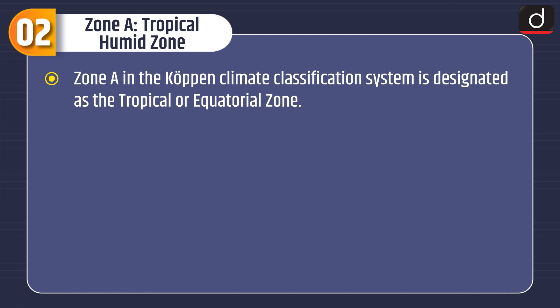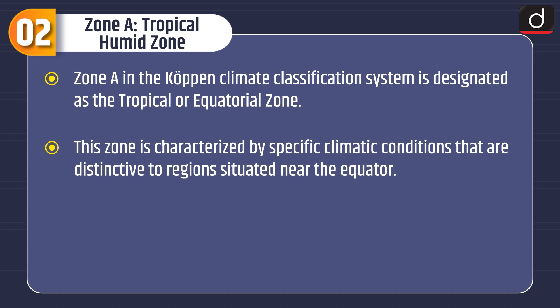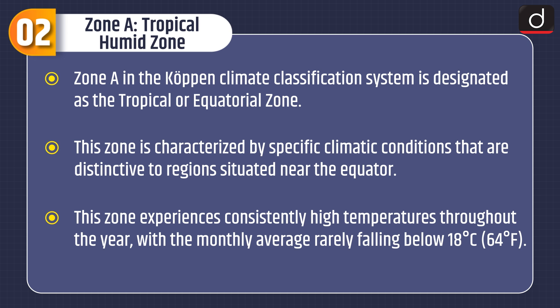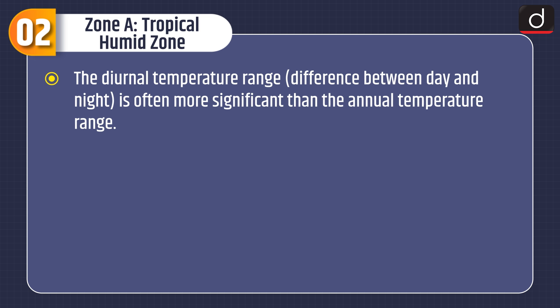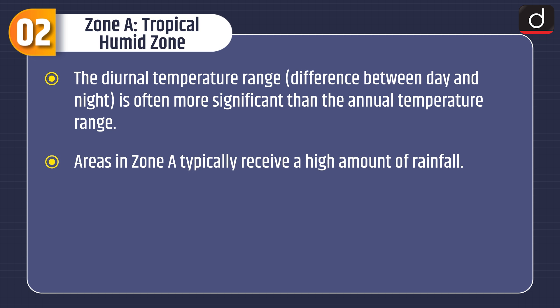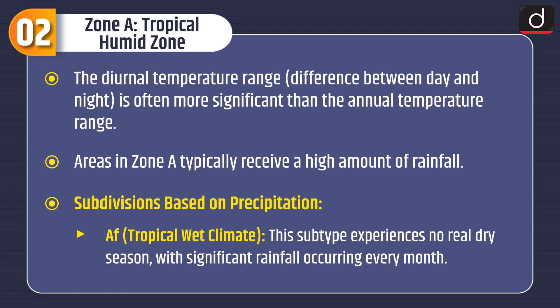Now let's discuss Zone A, the Tropical Humid Zone. Zone A in the Koppen Climate Classification System is designated as the tropical or equatorial zone, characterised by specific climatic conditions distinctive to regions near the equator. This zone experiences consistently high temperatures throughout the year, with the monthly average rarely falling below 18 degrees Celsius. The diurnal temperature range — difference between day and night — is often more significant than the annual range. Areas in Zone A typically receive high rainfall. The subtype AF, Tropical Wet Climate, experiences no real dry season, with significant rainfall every month.